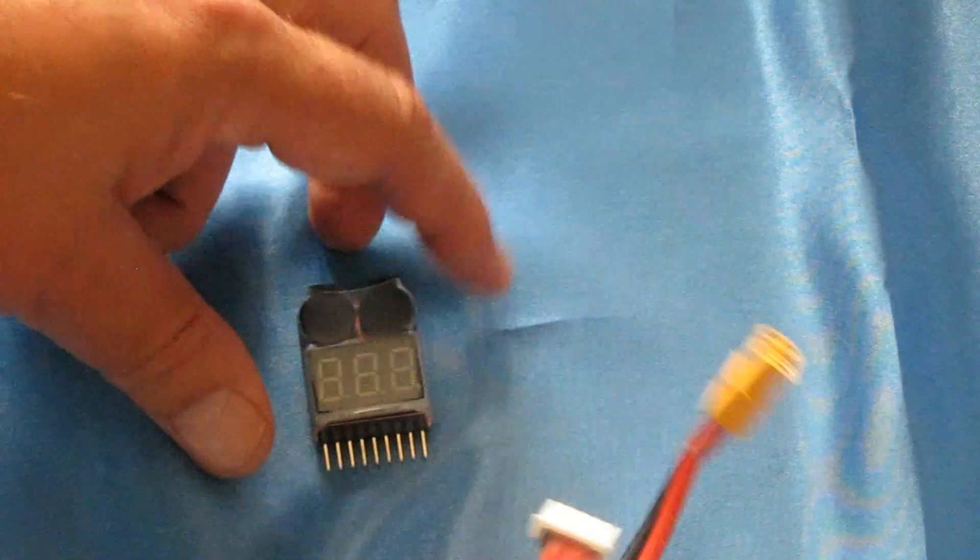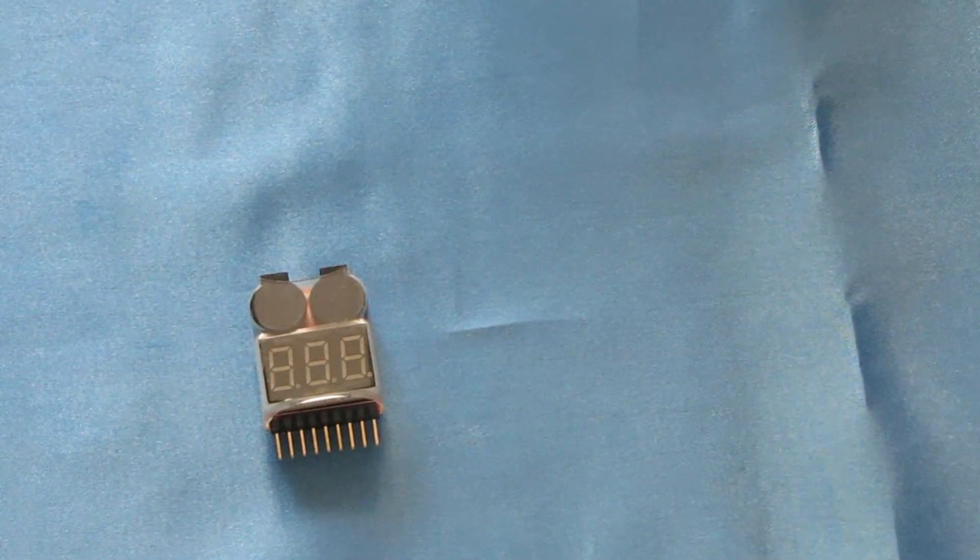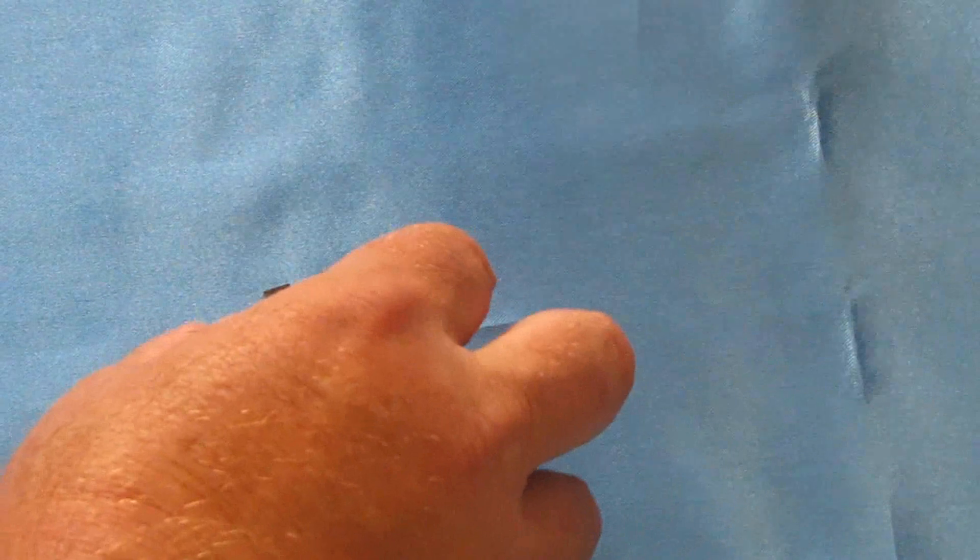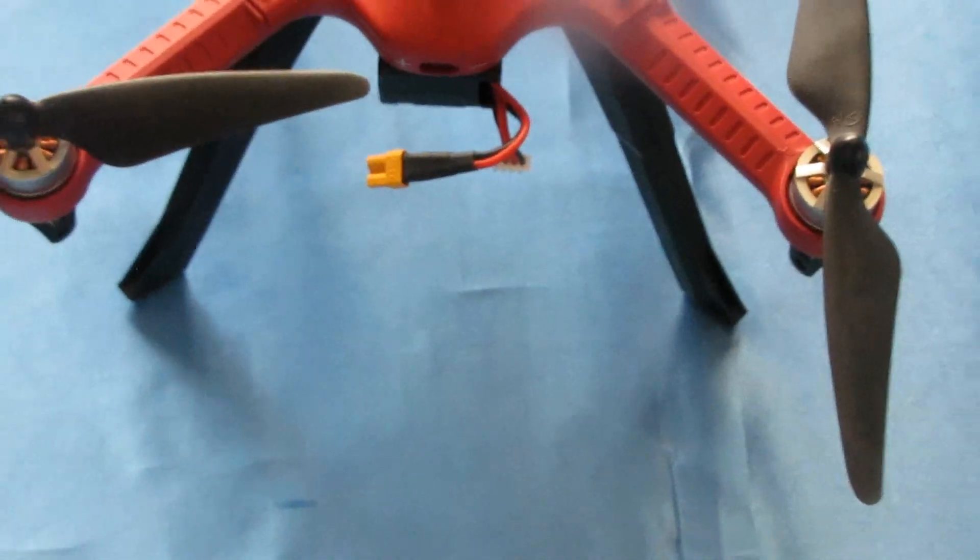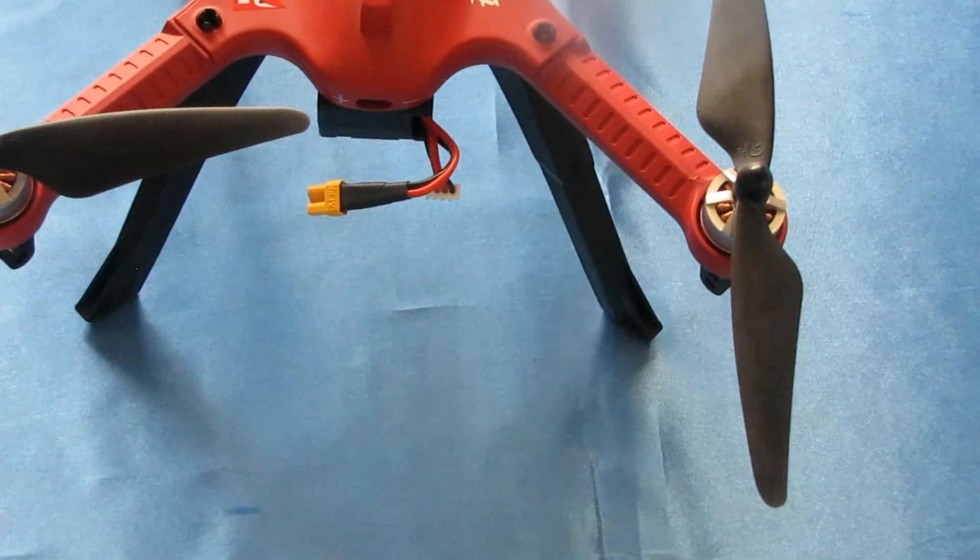Now you can check your batteries out in the field or you can actually attach this to your quadcopter. Very simple to do. Okay, here's a Bugs 3. Let me zoom out for a second here so you can see this. Zooming out to show the back of the Bugs 3. No soldering required to set this up.